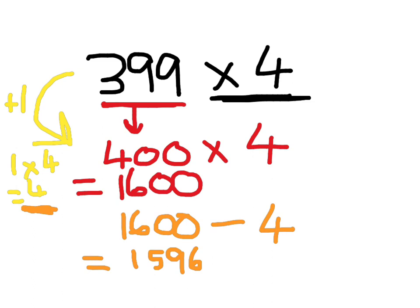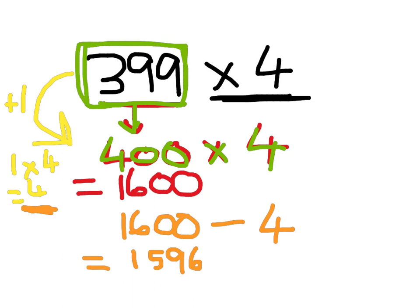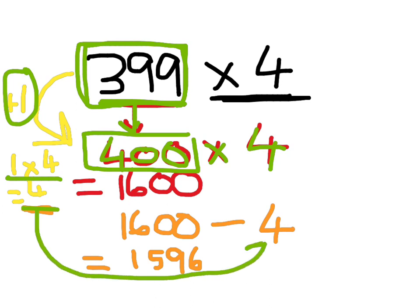Again, let's just have a look at how we did that. First of all, we turned 399 into 400. And then we multiplied that by 4, by doubling it, and doubling it again. But remember, we can't do 400 times 4, because the number was actually 399 times 4. So we have to work out the difference between the 399 and the 400, which was 1. And we multiplied that by 4, which gave us the answer 4. So then we take that 4 away from 1600, which gave us the answer 1596.